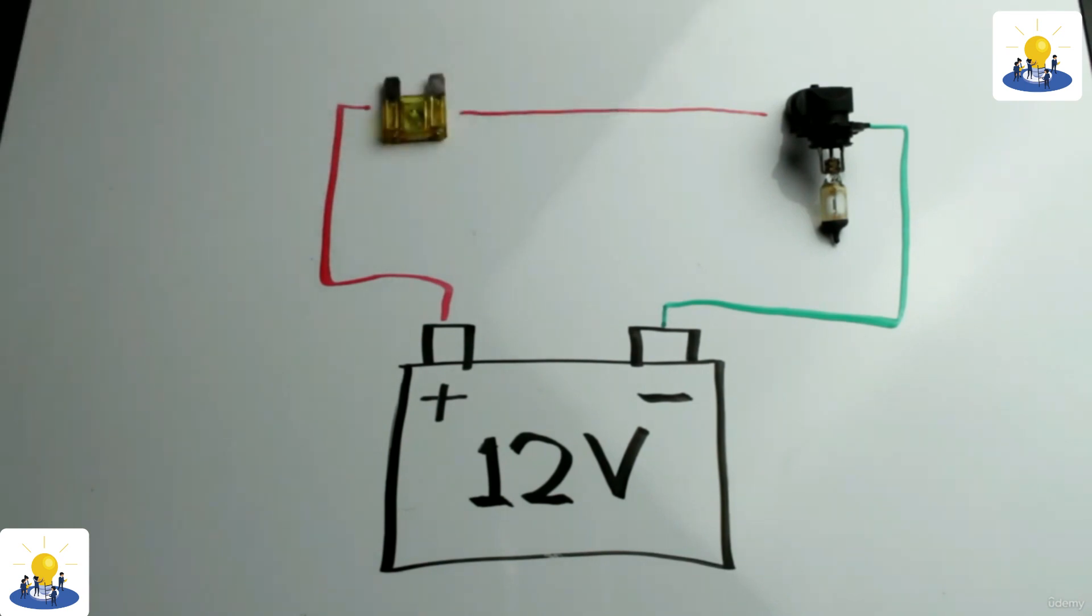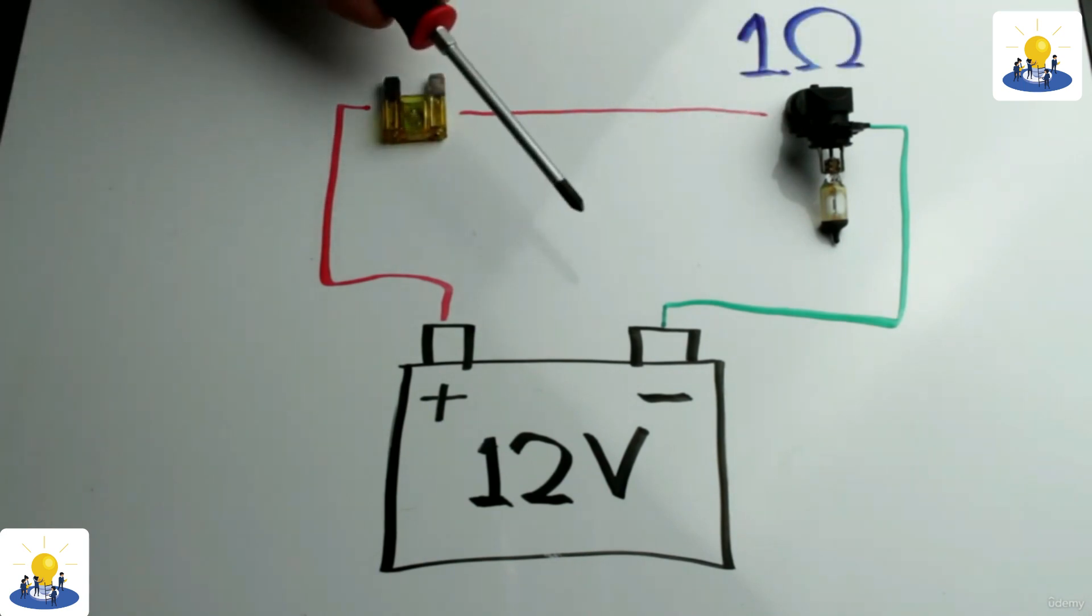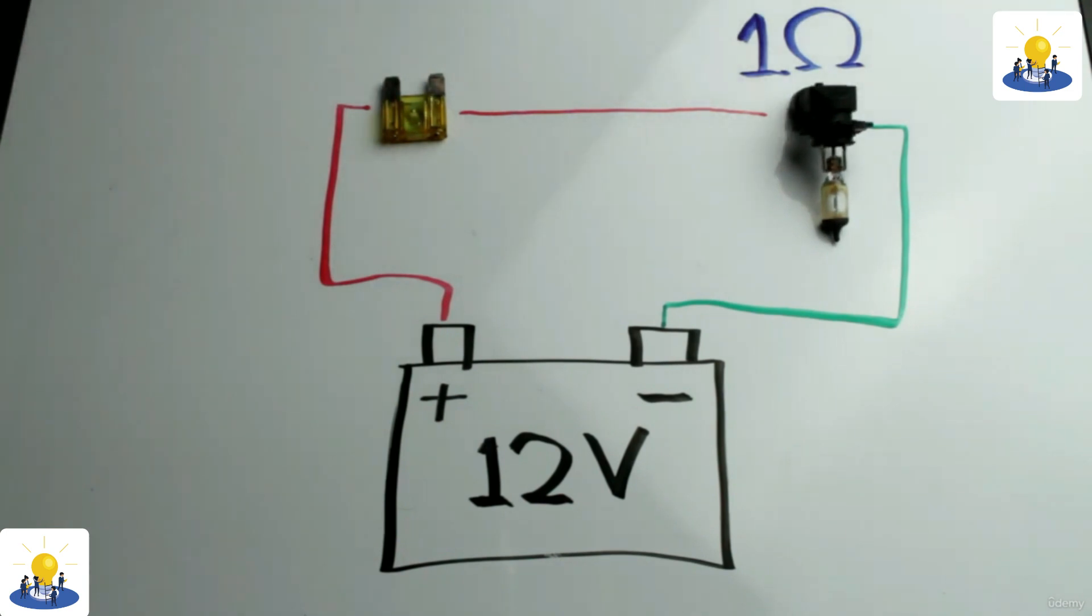A fuse is the weak link in a circuit. If an overload of current occurs, then the fuse will melt and disconnect the circuit before any serious damage is caused.